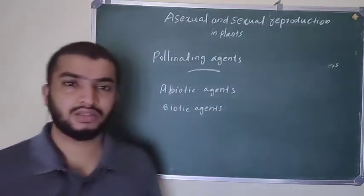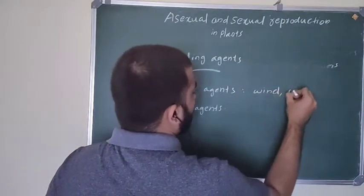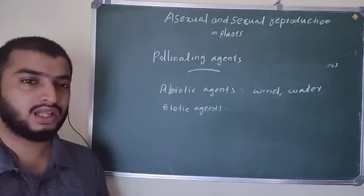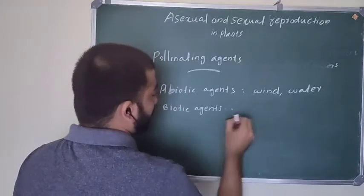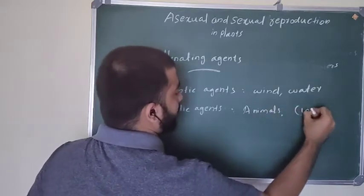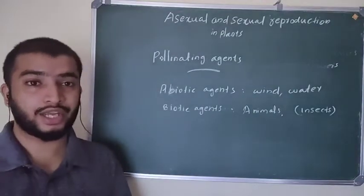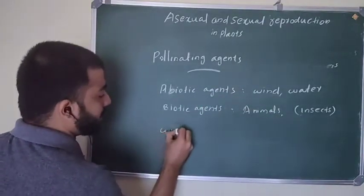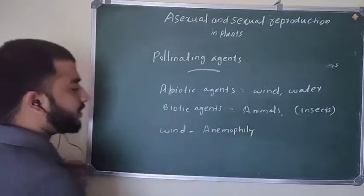Abiotic agents means, for example, wind and water. These are called abiotic agents — wind and water — and they help in pollination. Then biotic agents include animals and insects and birds. Pollination with the help of wind is called anemophily. Pollination with the help of water is called hydrophily.